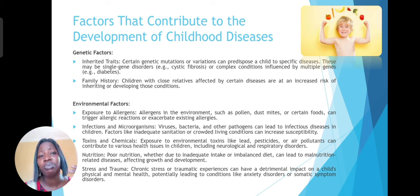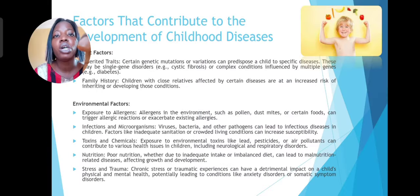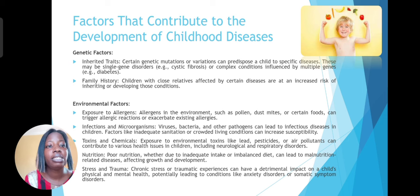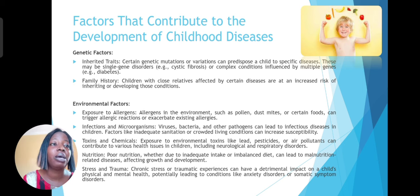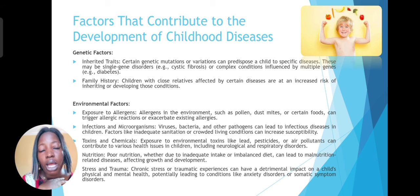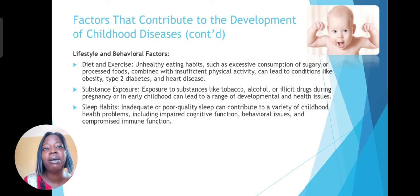Then environmental factors such as exposure to allergens in the environment, infections and microorganisms also in the environment — like when we had COVID-19. Then we have toxins and chemicals like lead, pesticides, or air pollutants that can also contribute to health issues in children, poor nutrition, stress, and traumatic stress, especially when it occurs during childhood, which can actually impact the child even into adult life. So the other two include lifestyle and behavioral factors, which include diet and exercise as well.